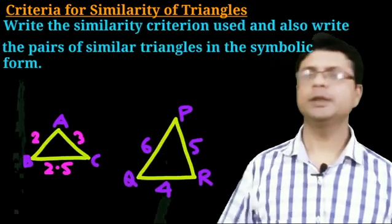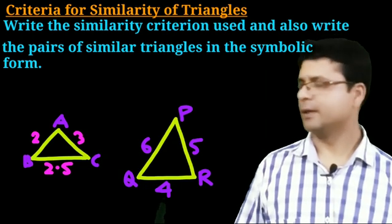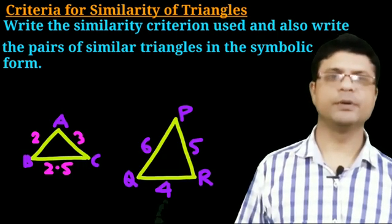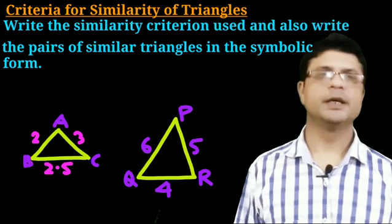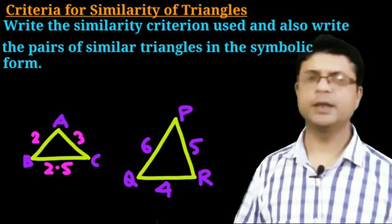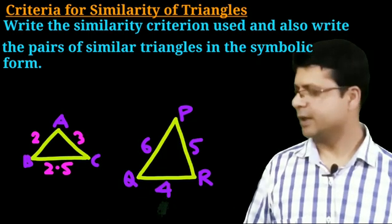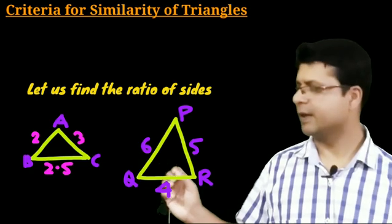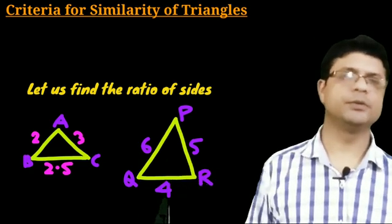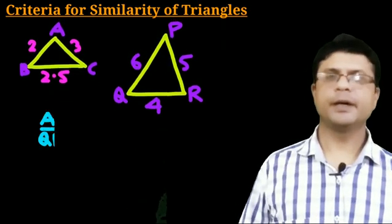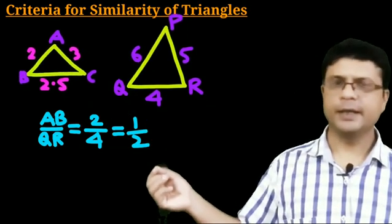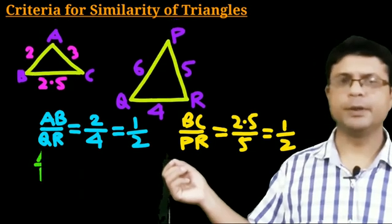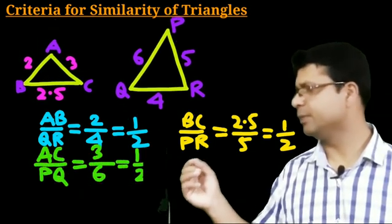Here we have a question: in triangle ABC and triangle PQR, AB = 2, BC = 2.5, AC = 3, PQ = 6, QR = 4, and PR = 5. We need to determine whether the two triangles are similar and by which criteria. Since no angles are given, we check the sides. AB/QR = 2/4 = 1/2. BC/PR = 2.5/5 = 1/2. AC/PQ = 3/6 = 1/2. All three ratios are equal.